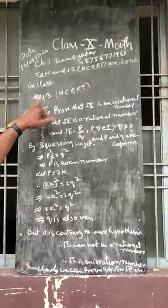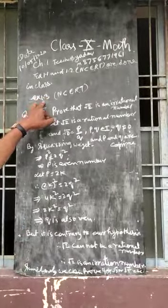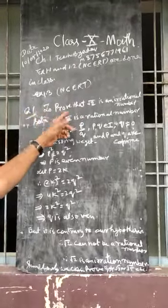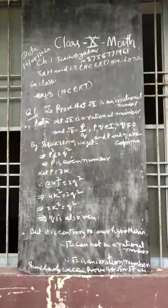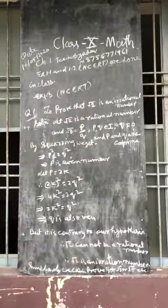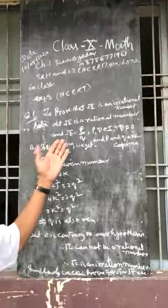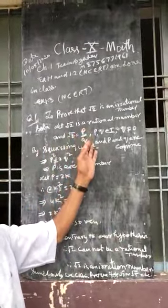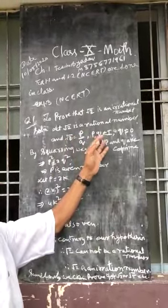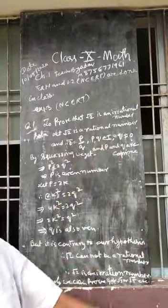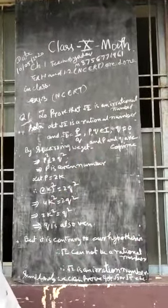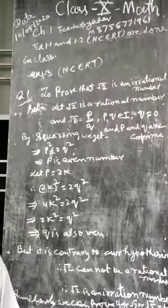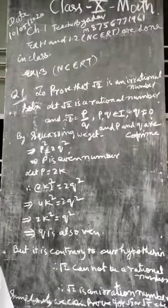Class 10 Math Exercise 1.3, Question 1. To prove that root 2 is an irrational number, let root 2 be a rational number and root 2 equal to p by q, where p and q are elements of integers, q is not equal to 0, and p and q are co-prime.